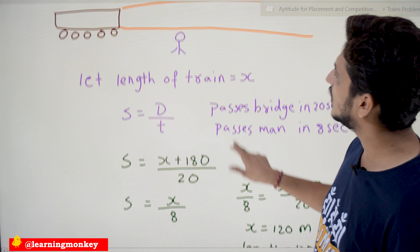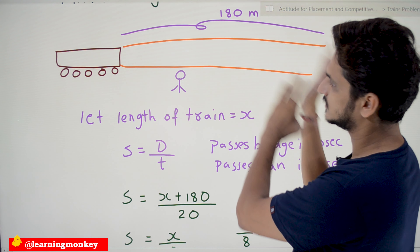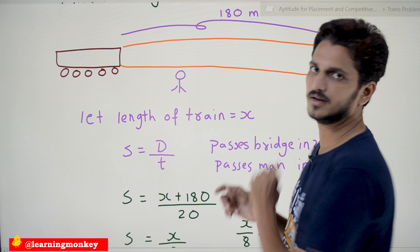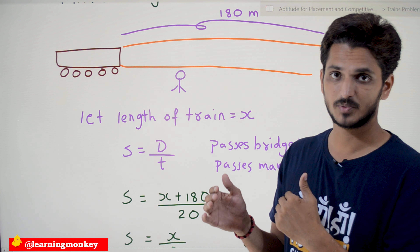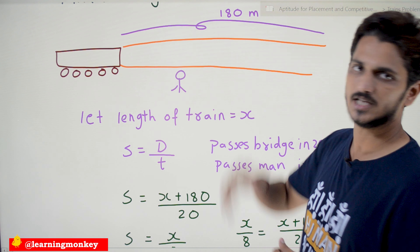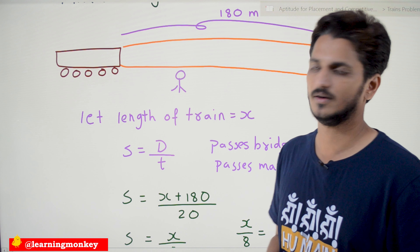The key point to understand: the train crosses the bridge and it crosses the man — both times are provided. The length of the bridge is provided. From these, we identify the length of the train.